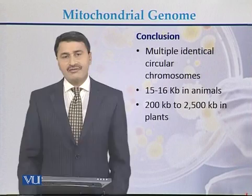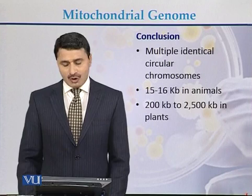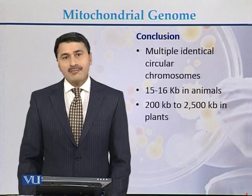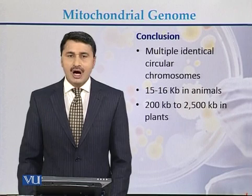In conclusion, the mitochondrial genome consists of multiple identical circular chromosomes present in both animals and plants, although their size in animals is less when compared to plants.